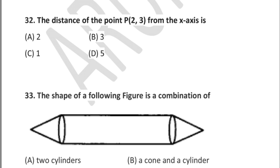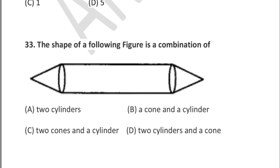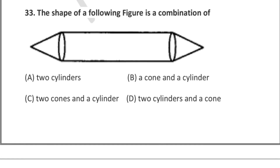Question 33: observe the figure — the shape is a combination of — option A: two cylinders, option B: a cone and a cylinder, option C: 2 cones and a cylinder, option D: 2 cylinders and a cone. Observe the figure and select the correct option.